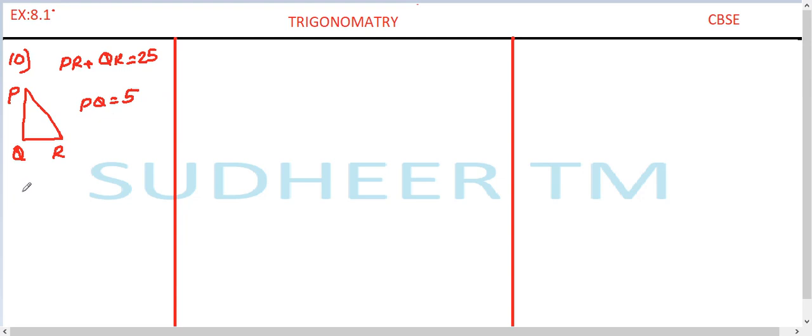Let us start with the Pythagoras theorem. PQ square plus QR square is equal to PR square. From this equation, let us write what is PR. PR is equal to 25 minus QR.